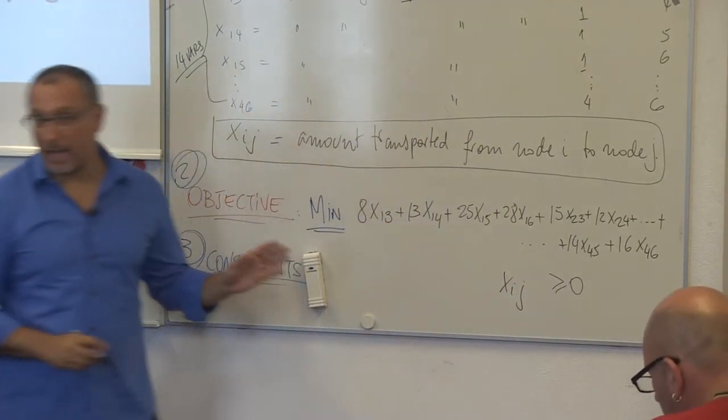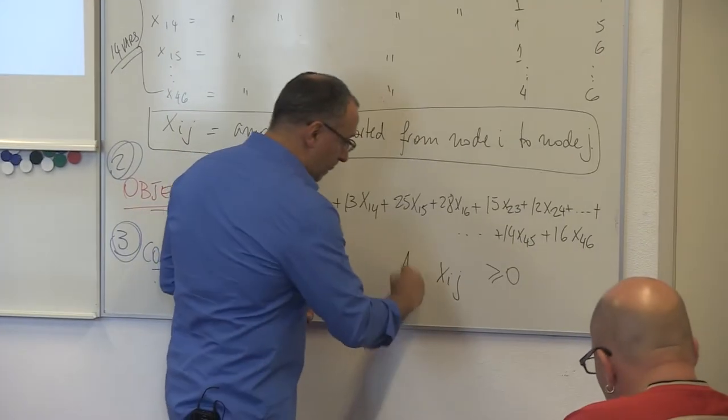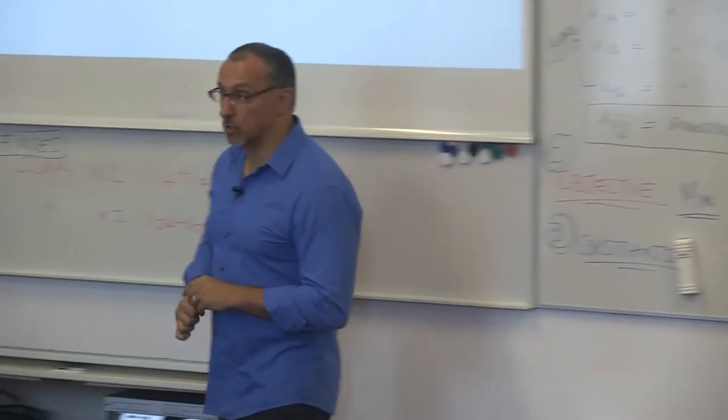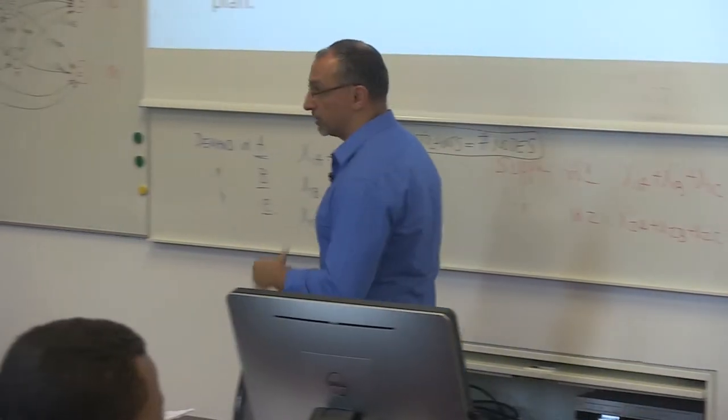Now the first thing that we know is that all X_ij is greater than or equal to zero, so the non-negativity constraints are important.